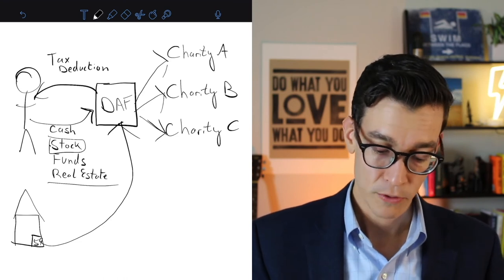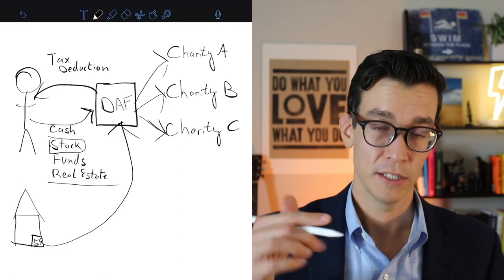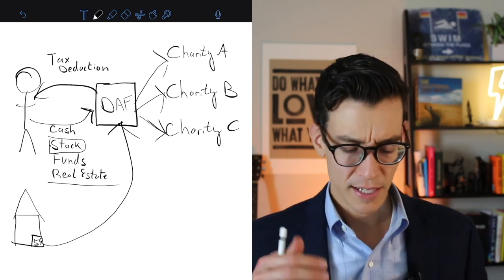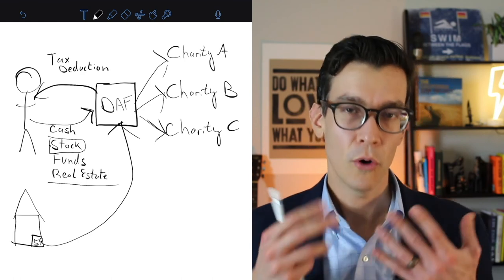And at the end of the year, I don't get three receipts or however many charities you give to. You don't get those receipts. You just get one from your donor advised fund. So that's kind of a simple example of what a donor advised fund is and some of the benefits. I hope it was helpful for you.